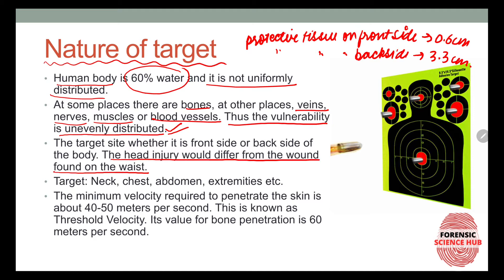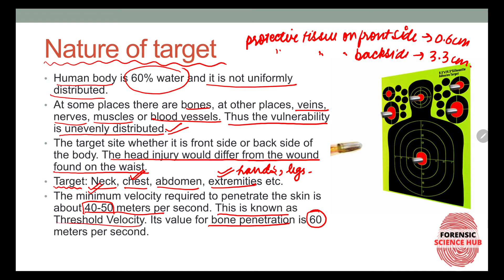Head injury would differ from a wound at the waist — head injuries are obviously more damaging. Different body parts like the neck, chest, abdomen, and extremities all have different effects. The neck is very dangerous because it contains vital anatomical structures. The chest is critical if the heart, lungs, or major vessels are struck. Extremities like hands or legs are less life-threatening. The minimum velocity required to penetrate skin is 40 to 50 meters per second, and for bone it is 60 meters per second — this is known as the threshold velocity.